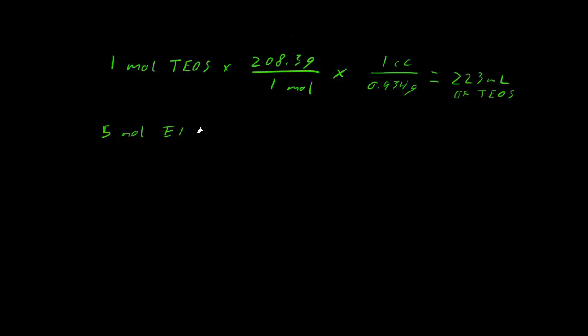When we add all this liquid together, how much volume is it going to take up? And then the density of just the silica network is going to be pretty simple, equal to the mass of just the silica divided by the volume of the gel. Let's start with the TEOS. One mole of TEOS multiplied by its molecular weight, 208.3 grams per mole, and then times the inverse of the density, so times one cc over 0.94, gives us 223 milliliters of TEOS.